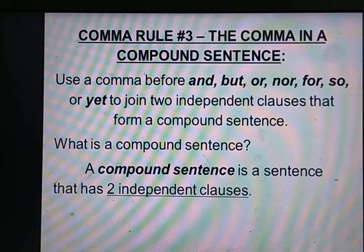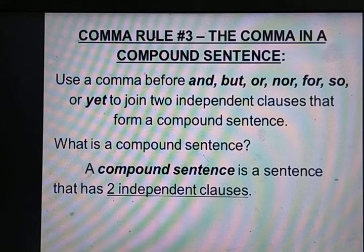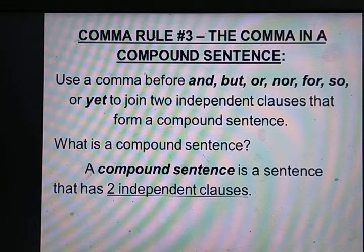सबसे पहले समझना पड़ेगा compound sentence होता क्या है। Use a comma before for, and, but, or, nor, so, or yet to join two independent clauses that form a compound sentence — इनसे पहले comma use किया जाता है। इस coordinating conjunction को हम fanboys भी कहते हैं।